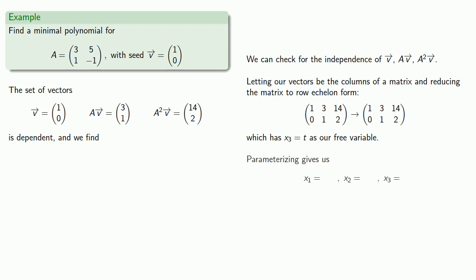And we can parameterize our solution. And we'll let T equal to 1, which will give us x_1 equals minus 8, x_2 equals minus 2. And so minus 8V minus 2AV plus A squared V is the zero vector.